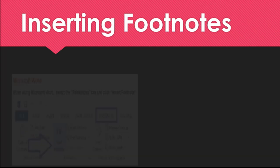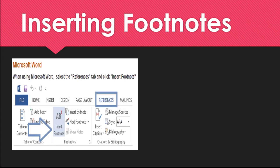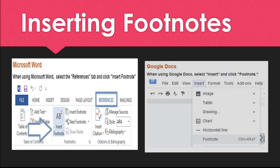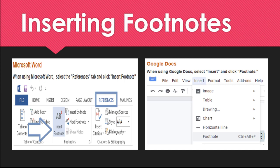Your first question is probably how to insert a footnote. It's actually a pretty simple process once you get the hang of it. If you're using Microsoft Word, go to the References tab at the top of the page, then click Insert Footnote. When using Google Docs, go to Insert and then Footnote. You can also use the keyboard shortcut Ctrl-Alt-F.